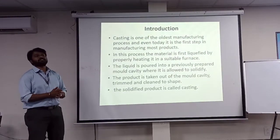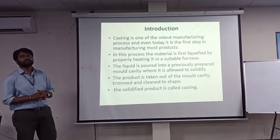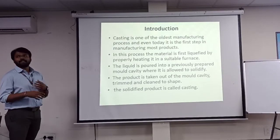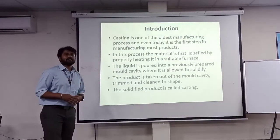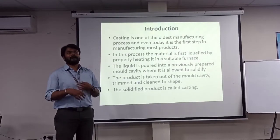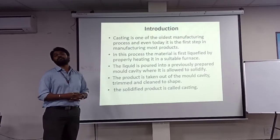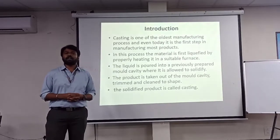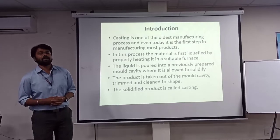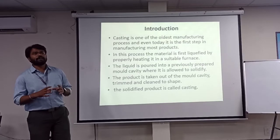Today we will be discussing regarding casting. It is one of the oldest manufacturing processes. In casting, the material is first liquefied by melting in a suitable furnace. Thereafter, the liquefied metal is poured into a mold cavity where the pattern has the replica of the shape. After pouring, we allow it to solidify, then break the mold cavity and remove the component. Then we do any further machining operations.